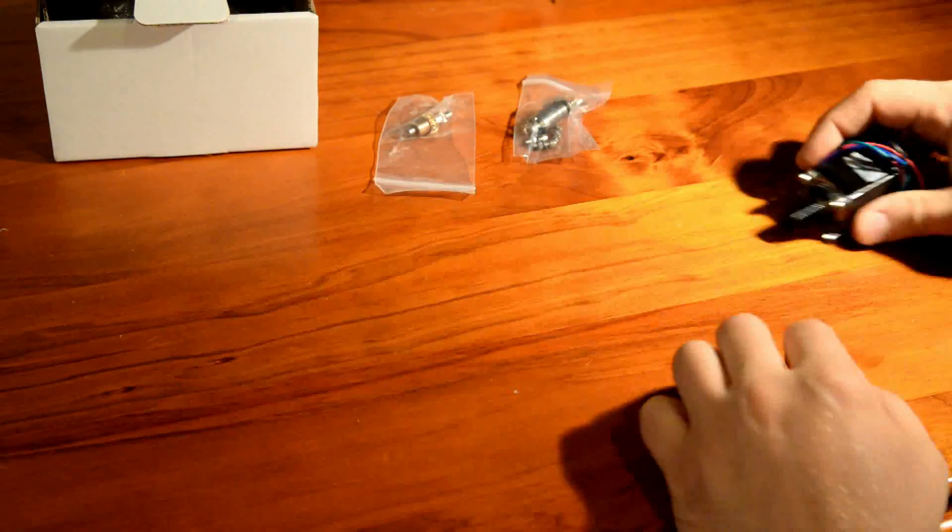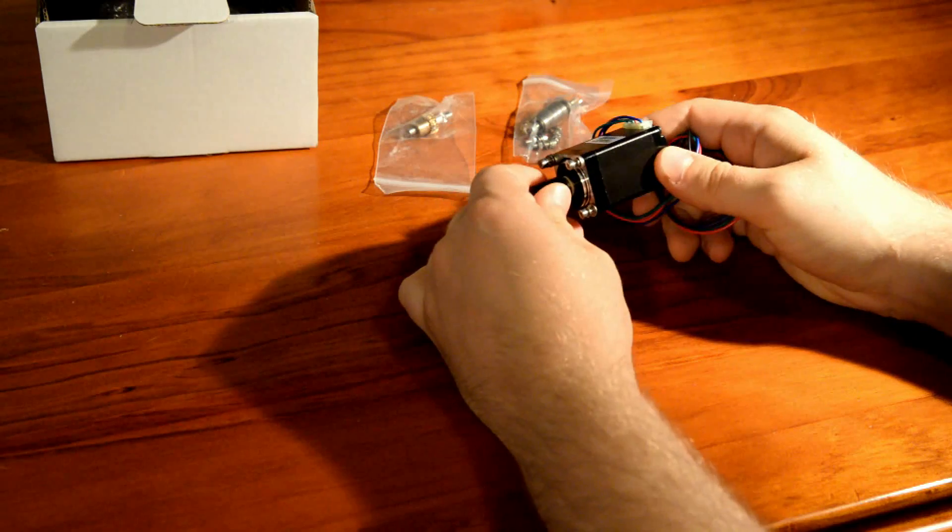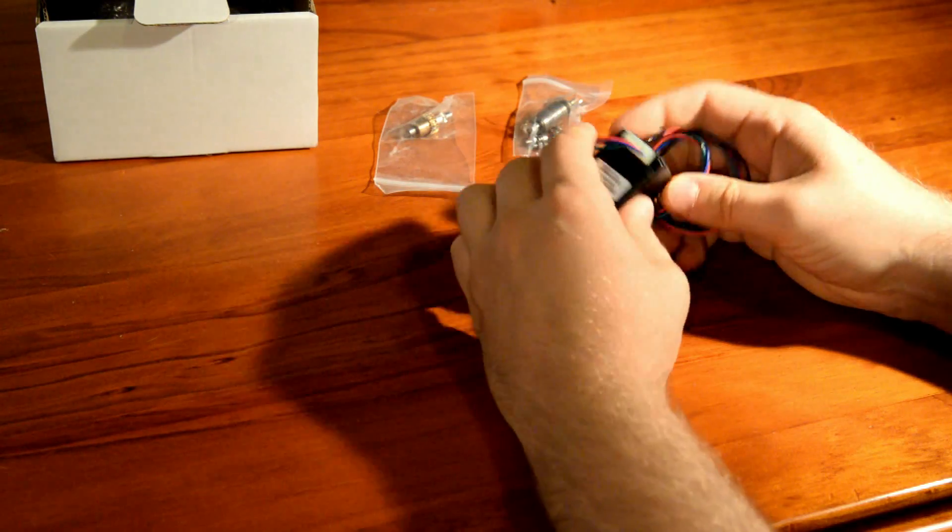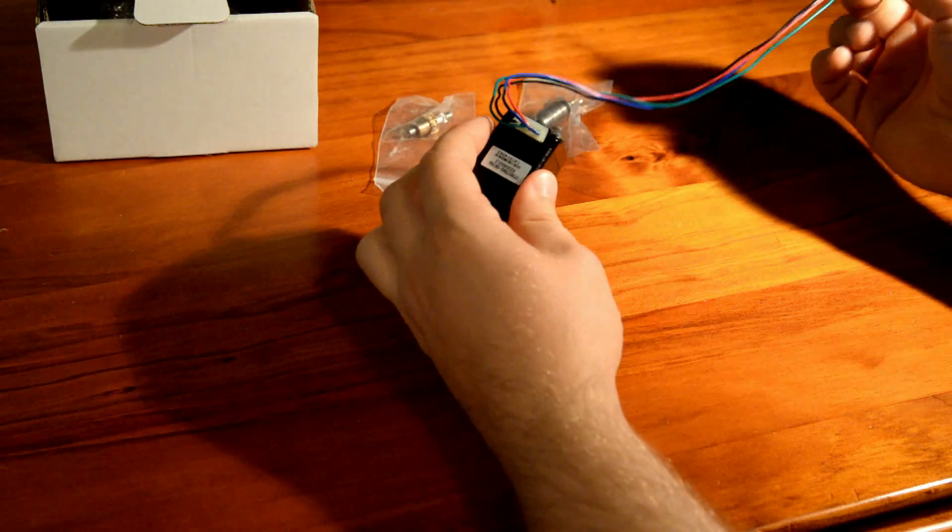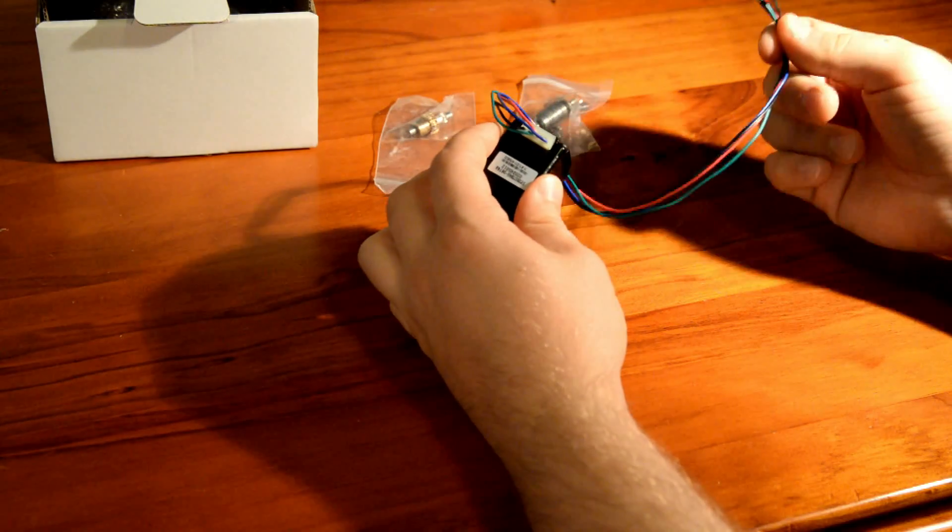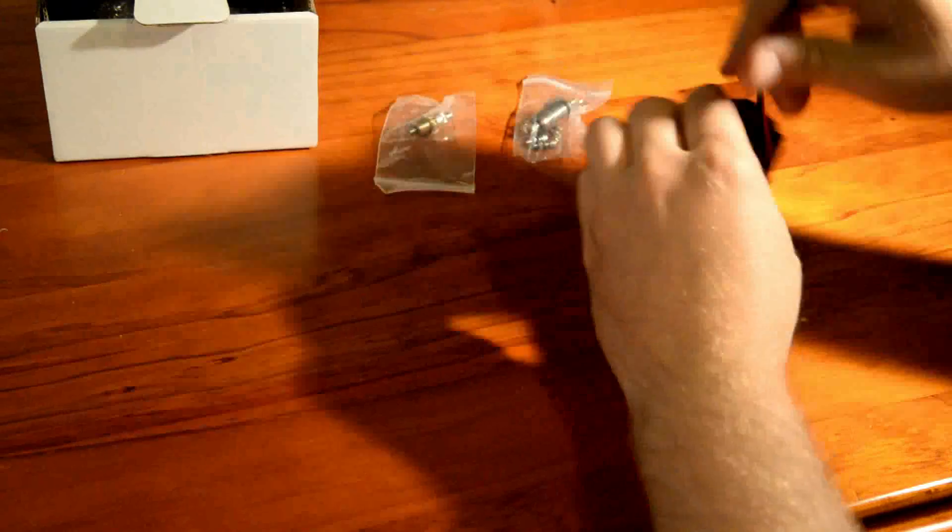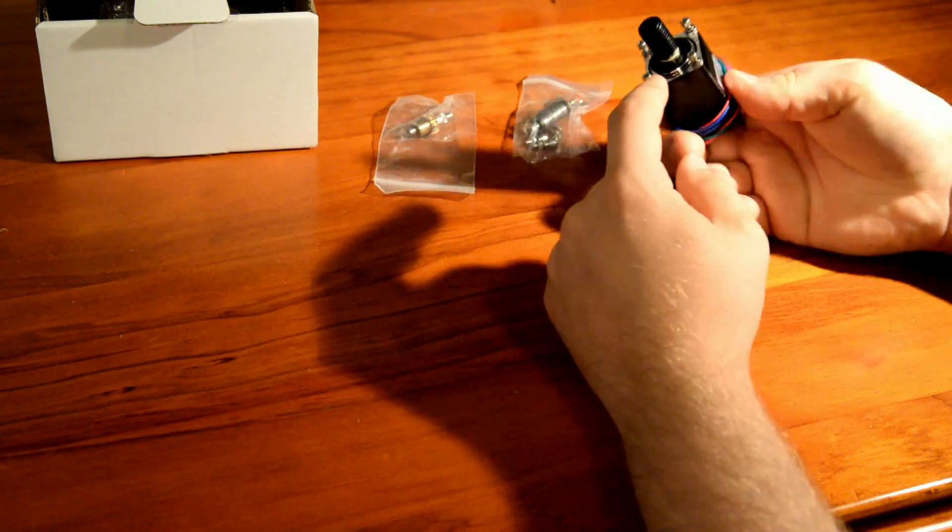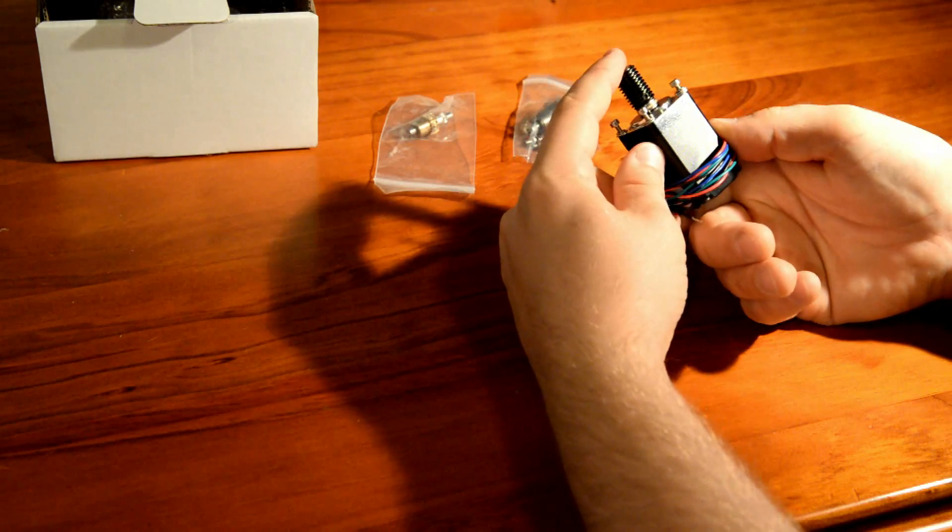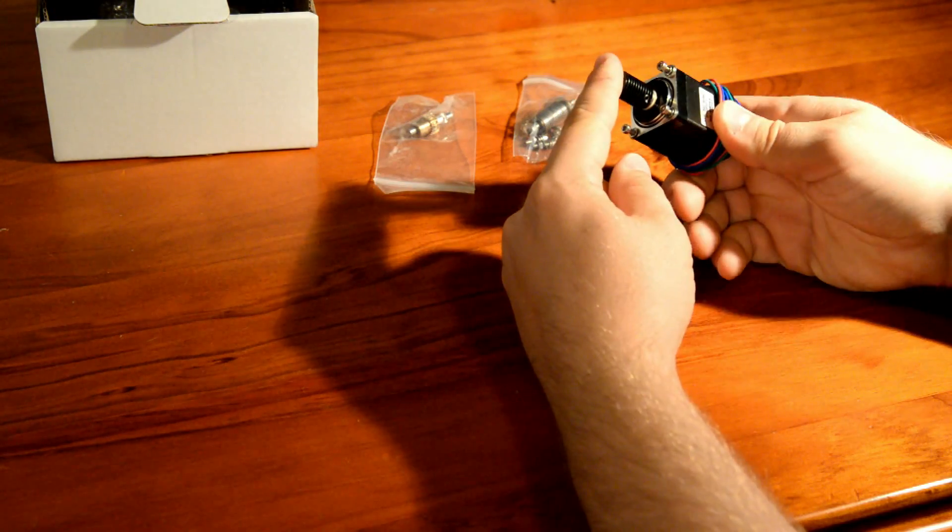So this is the basic kit right here. We'll start with the stepper motor itself. It's a size 11 stepper motor. It does have a reasonably long cable but it's unterminated for now so you can extend it to your requirements. The worm gear is already pre-mounted and there's a thrust bearing inside there that's already been pre-lubricated as well. So you're good to go as far as the motor is concerned.